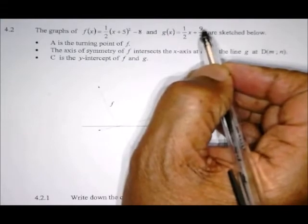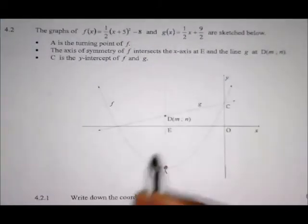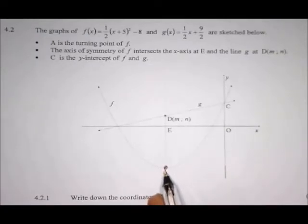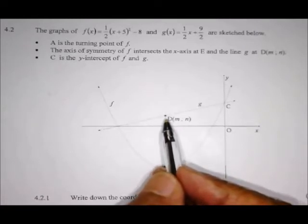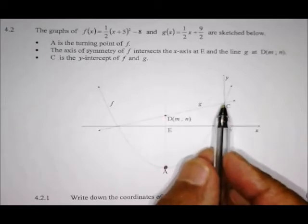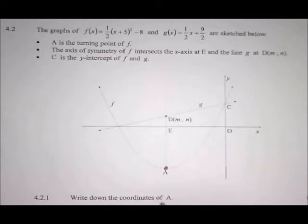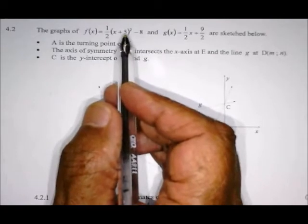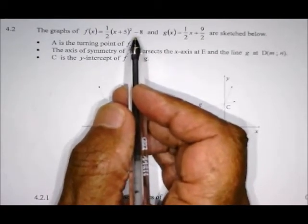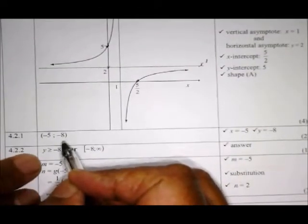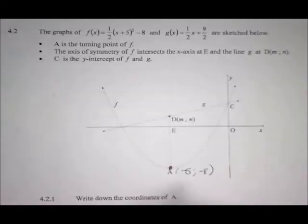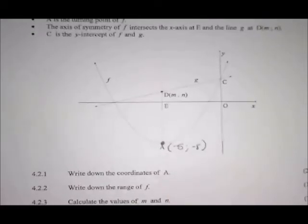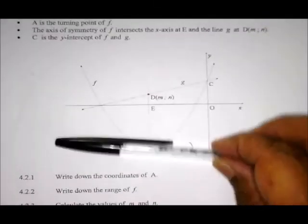4.2.3: Calculate the values of m and n. Points D, E, and A all share the same x value, so all three have x = -5. Therefore, you already know that m = -5. To find n, substitute -5 into the equation for g. Since D is on the straight line, use g(x) = (1/2)x + m. Put in x = -5 and you get n = 2. So the coordinates of D are (-5, 2).